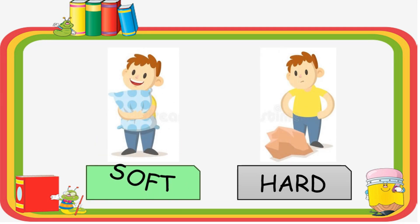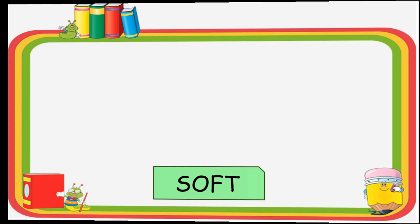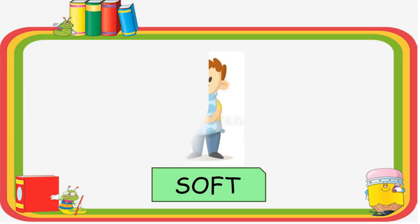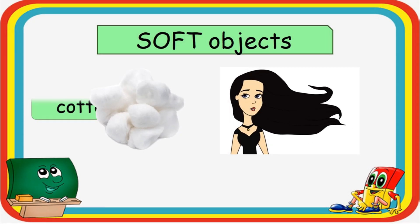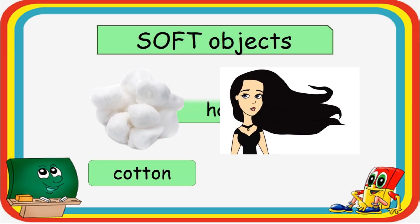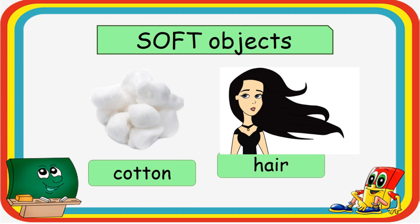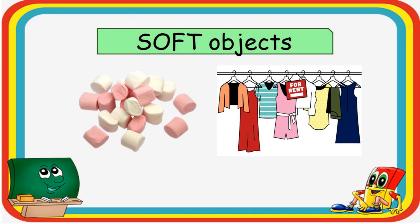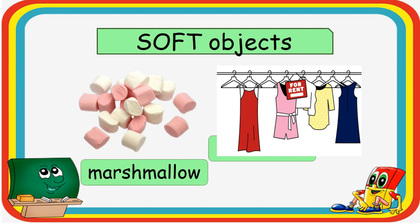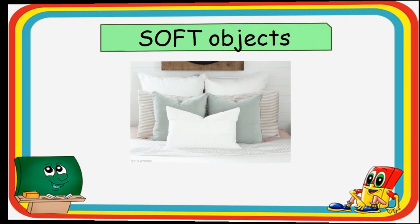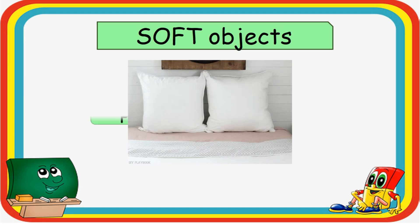Lastly, let's have the soft and hard objects. Here are the examples of soft objects: cotton, hair, marshmallow, clothes, and pillow.